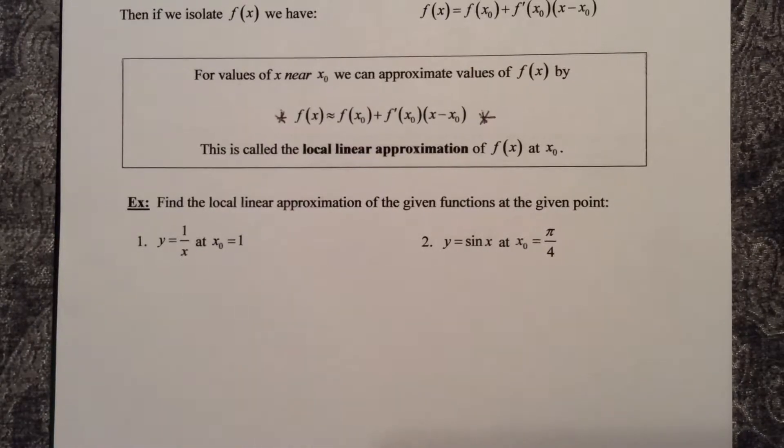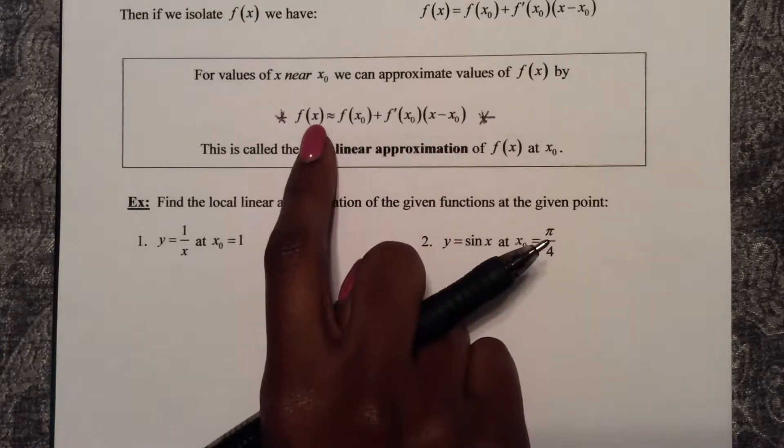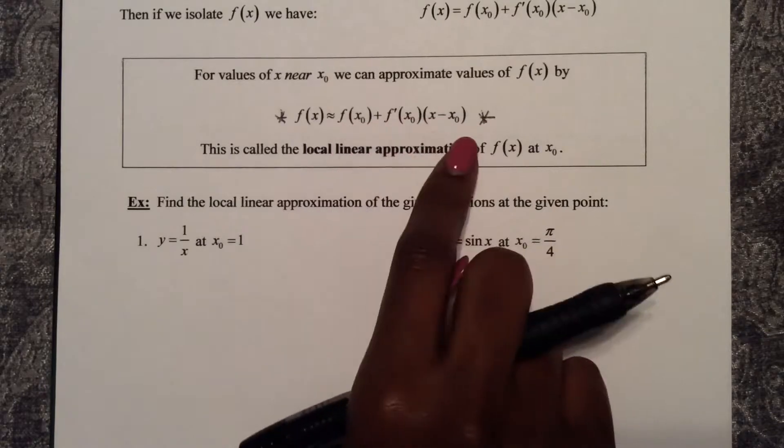So here in example one, we want to find the local linear approximation of the given functions at the given point. Local linear approximation is approximating your function at some given value.